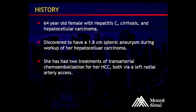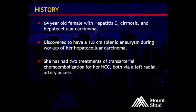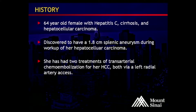This is a 64-year-old female with a history of hepatitis C and cirrhosis, and also a history of hepatocellular carcinoma. During a workup, an incidental splenic aneurysm measuring approximately 1.8 centimeters was discovered. She has since had two treatments of transarterial chemoembolization for her hepatocellular carcinoma, both via left radial artery access.